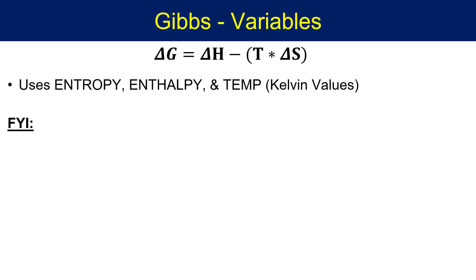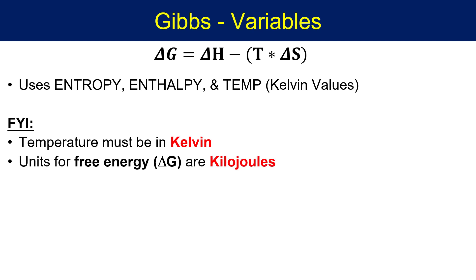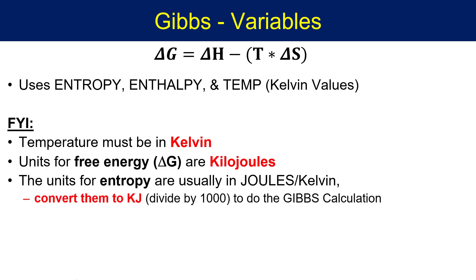Some considerations for when we are actually calculating free energy: we need to keep our units straight. First and foremost, your temperature must be in Kelvin — we never want negative temperatures, which could happen with Celsius and throw off your entire calculation. Your units for free energy will be kilojoules. The units for entropy are most often joules per Kelvin, but because enthalpy and free energy use kilojoule units, you need to convert entropy to kilojoules per Kelvin — make a T chart and divide by a thousand.